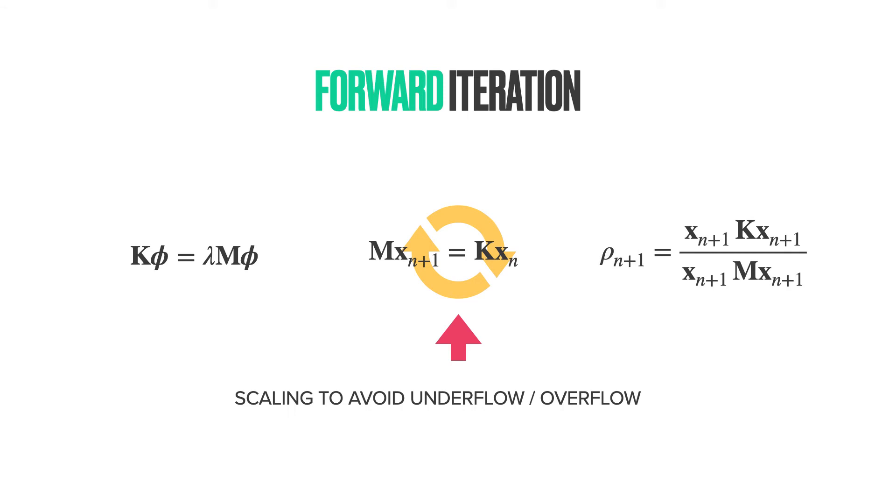To avoid any numerical underflow, we have to scale the solution. When we have an eigenvector, we can compute the eigenvalue using the Rayleigh quotient we discussed earlier. Here rho is an approximation of lambda. The eigenvalue can be used as a measure to stop the iteration. That is, when changes to rho between two iterations are less than one percentage, we could tell the computer to stop the iteration.